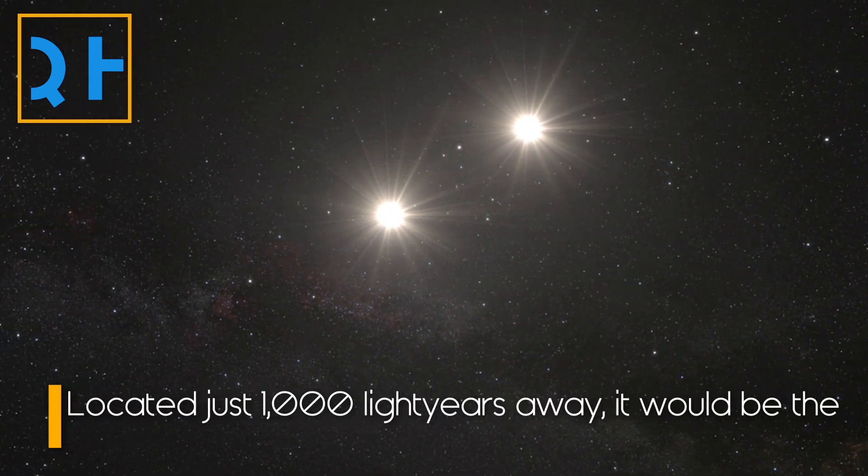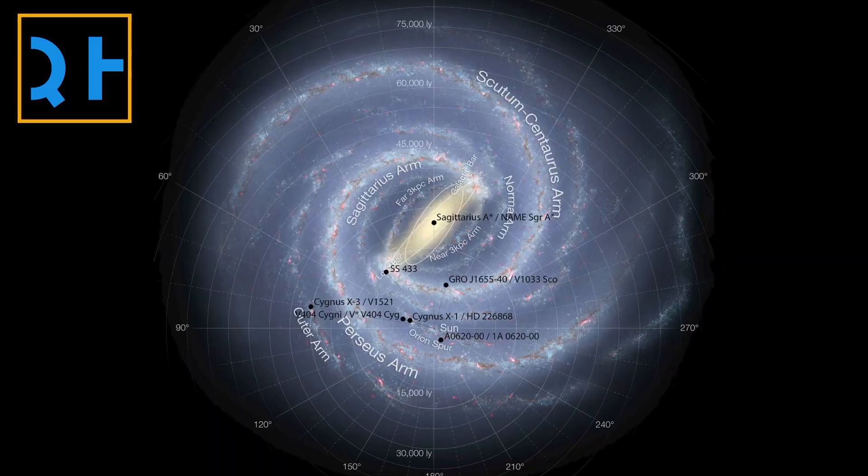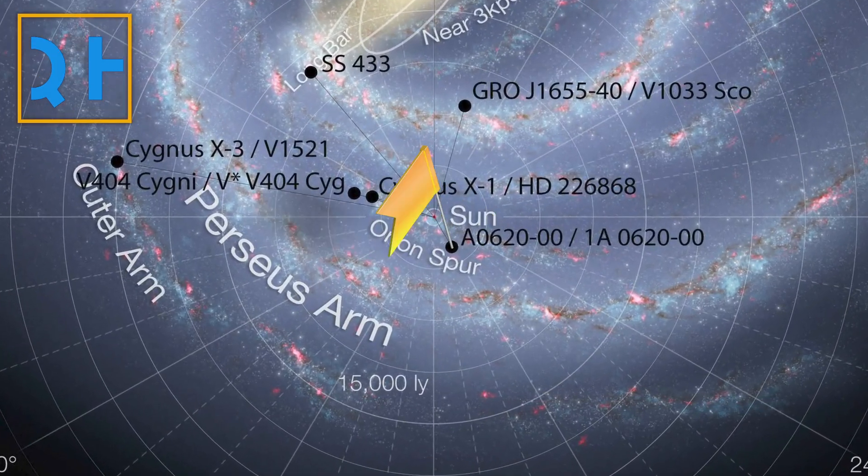Located just a thousand light-years from Earth, it would be the nearest black hole to our solar system ever discovered, about three times nearer than the next closest candidate.